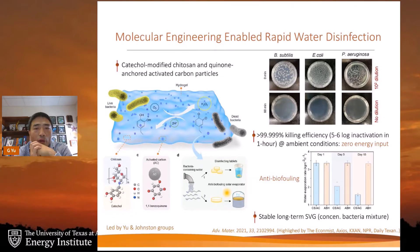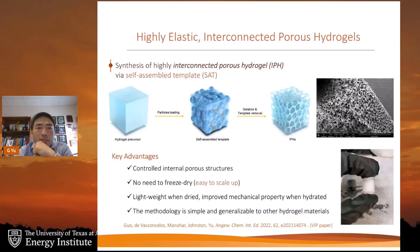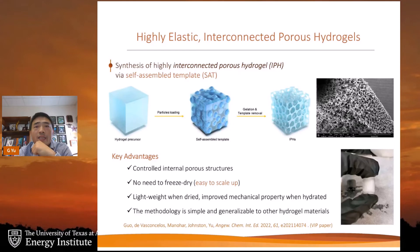Due to their antibacterial properties, these hydrogels can also be used as photothermal, biofouling-resistant solar evaporators, demonstrated to remain stable over several months of storage and operation. For better handleability and to address mechanical property challenges, we developed a self-assembled templating method using PMMA polymers as a sacrificial layer. Controlling the size of the PMMA sacrificial layer allows formation of highly porous, interconnected hydrogels — which we call IPH.